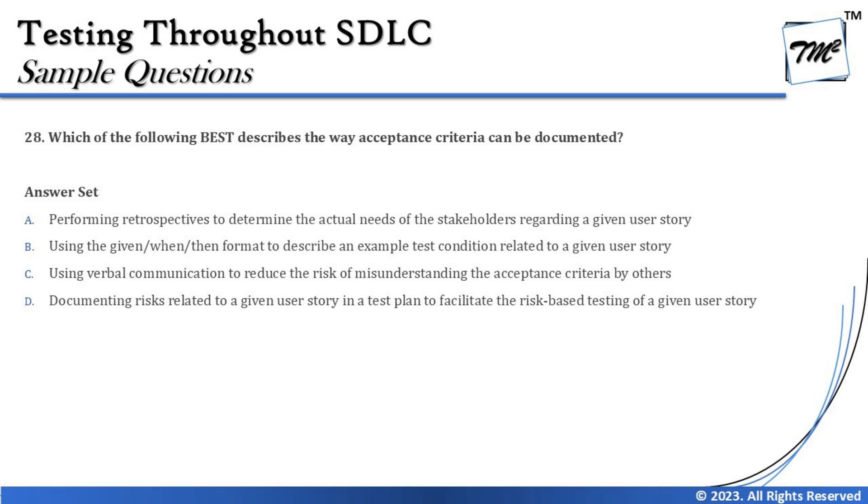The next question is Question Number 28, which asks: which of the following best describes the way acceptance criteria can be documented? There are two different approaches: scenario-oriented and rule-oriented. Scenario-oriented uses the Given/When/Then format, while rule-oriented uses tabulated input/output, bullet points, or numbered points. If any other format helps your team understand acceptance criteria better you can use it, but these two are the primary options.